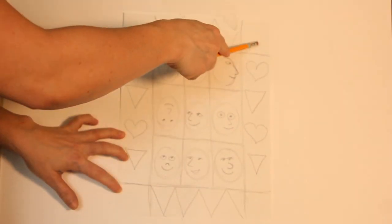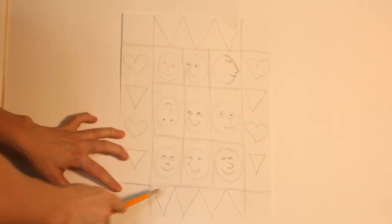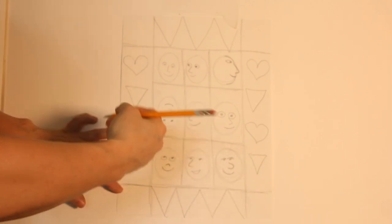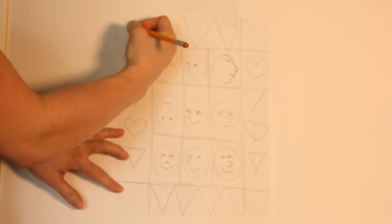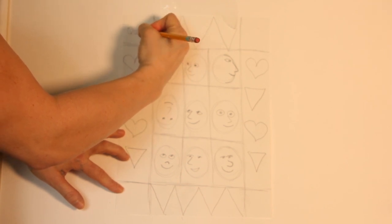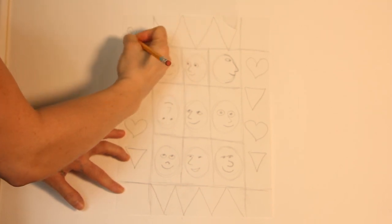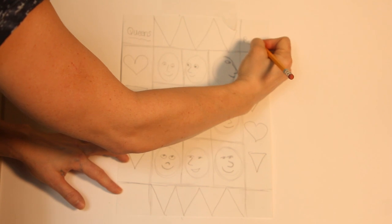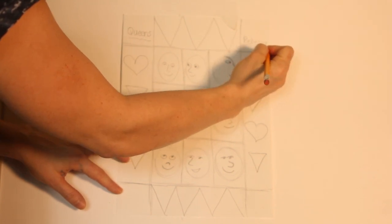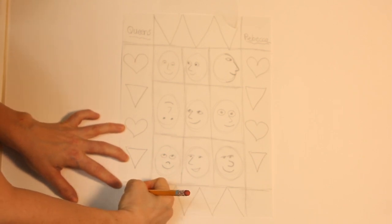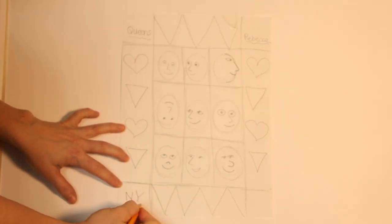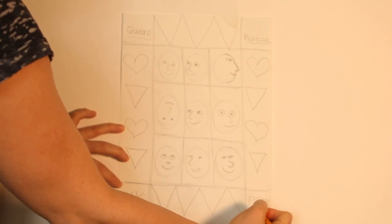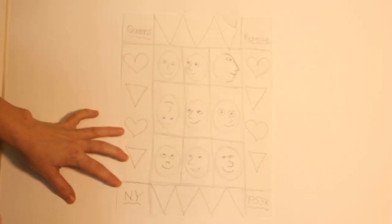Now we have these four corners left. And if you want to, you could write a little story inside the four corners. Maybe you write where you live. I'm going to write Queens, because that's where I live. And then I'm going to write my name. And then I'm going to write New York, that's the state I live in. And then I'm going to write P53 K, because that's my school.